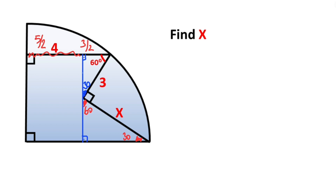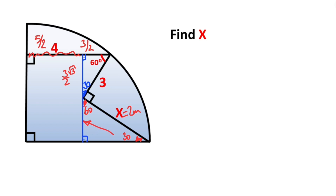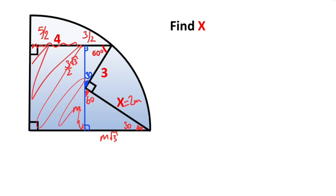So if there's 3 over 2 opposite the 30 degrees, opposite the 60 degrees must be equal to (3/2)√3. Then this side I want to represent with 2m, that means x equals 2m. If there's 2m opposite the 90 degrees, opposite the 30 degrees must be equal to m units, and then opposite the 60 degrees must be equal to m√3.